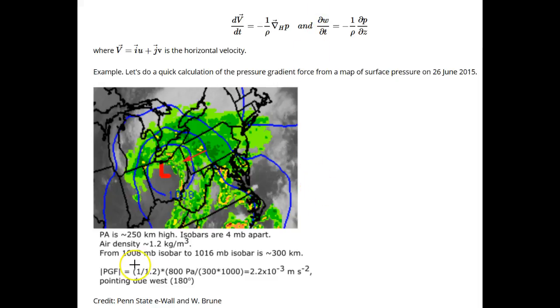So the air density is about 1.2 kilograms per meter cubed. When we put all these numbers together, that is 1 over the density times the change in pressure over the change in distance, we get that the pressure gradient force in this case is 2.2 times 10 to the minus 3 meters per second squared, and is directed to 180 degrees or due west.